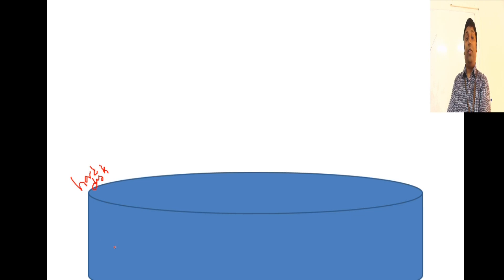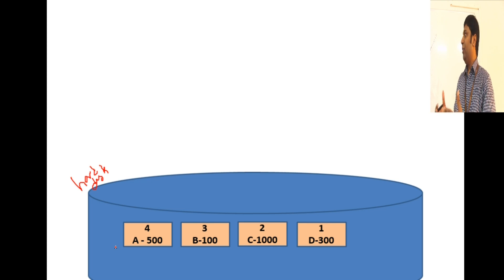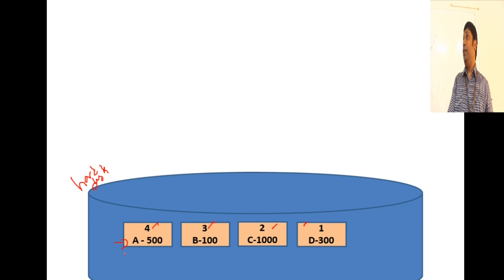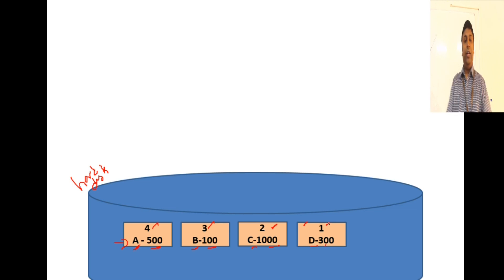Data is always stored on the hard disk in blocks. The size of a block may vary - let's take the block size to be 8 kilobytes. I've given some sample blocks: block number one, two, three, and four. A block can hold many records. For example, account A has 500 rupees, account B has 100 rupees, C has 1000 rupees in block two, and D has 300 rupees in block one.